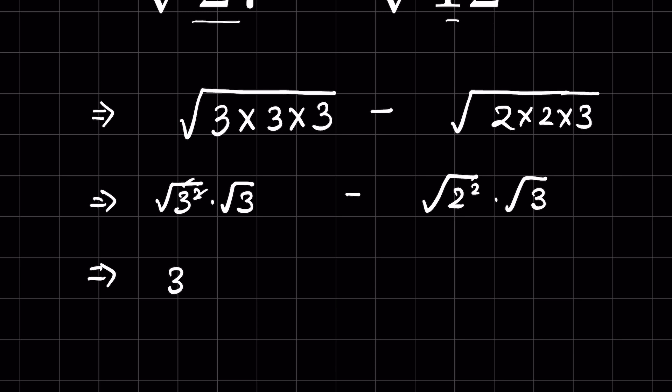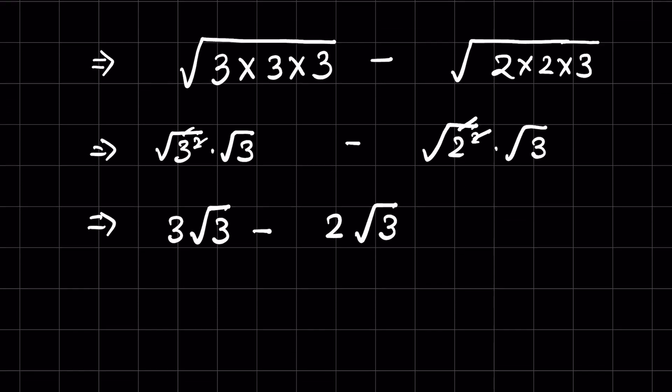Now remove the square root with this square. So 3 times square root of 3 minus again remove the square root with this square. So 2 times square root of 3.